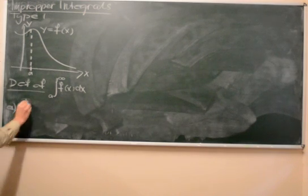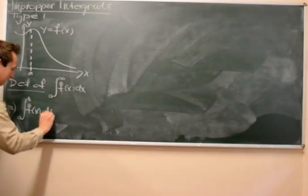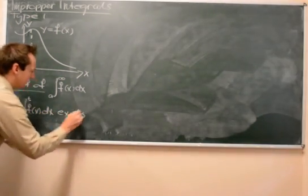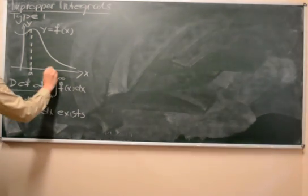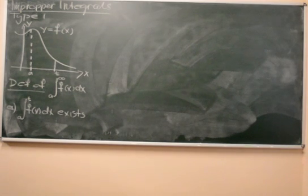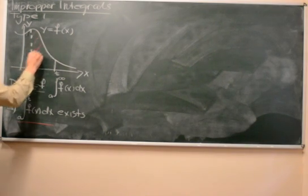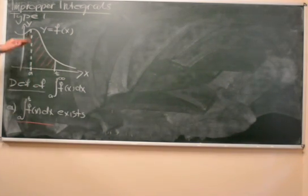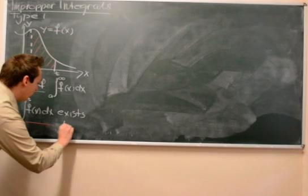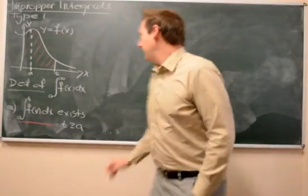There are two conditions. Firstly, if we take any number t greater than a, the integral from a to t must exist. No matter where we pick t greater than a, that integral from a to t exists. We can think of this as the area under the graph y = f(x) from x = a to x = t, and this should hold for all t greater than or equal to a.